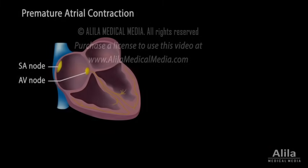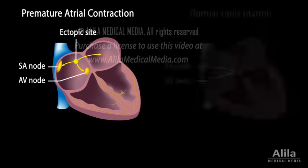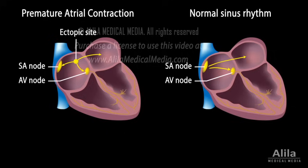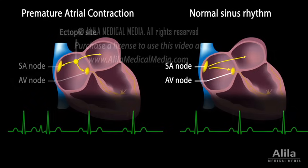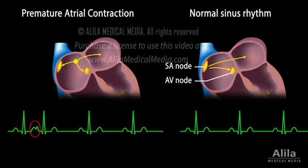A PAC happens when the atria are activated by an ectopic site in an atrium, instead of the SA node. Because atrial depolarization is initiated outside the SA node, the associated P wave has an unusual non-sinus morphology. An early atrial activation may cause the P wave to merge with the preceding T wave, producing a peaked fusion wave.